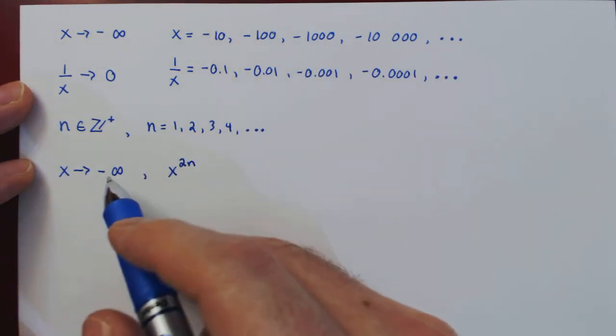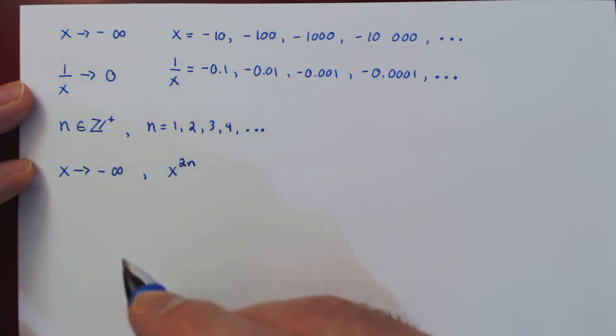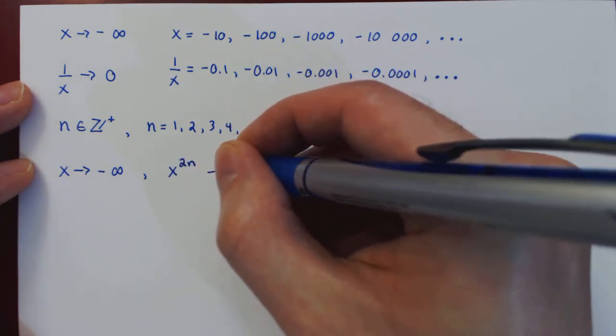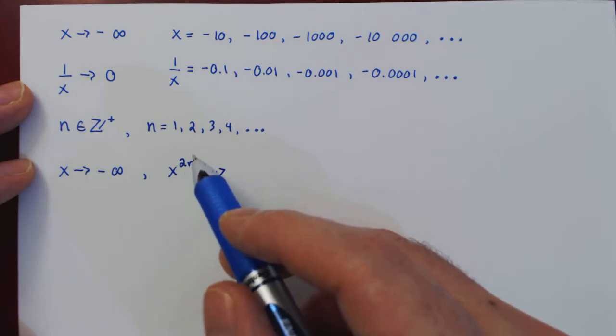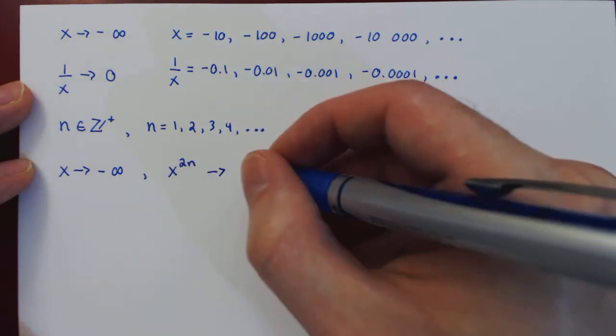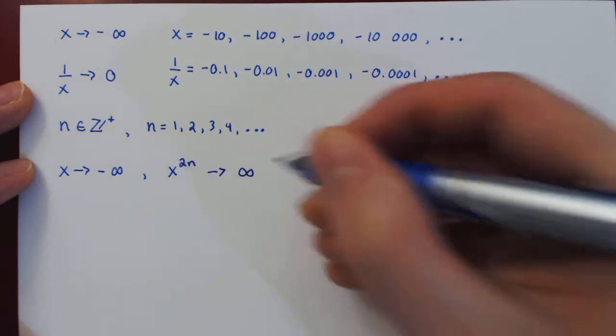Well, even though x is negative, an even power of a negative is positive, and so a positive power of x, that is an even number, will be approaching, not negative, but positive infinity.